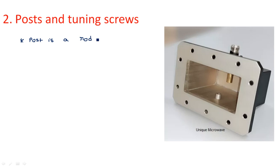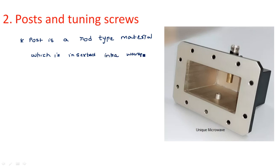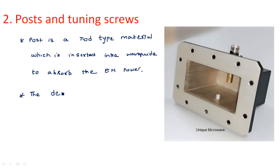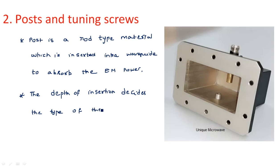So a post is a rod-type material which is inserted into a waveguide to absorb electromagnetic power. The depth of insertion decides the type of the load.